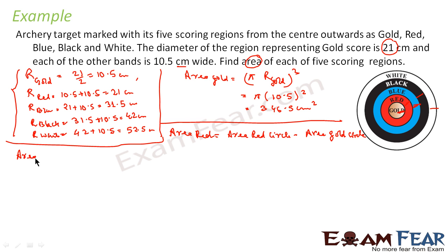So this will be, I will say, area of red circle is nothing but, π r_red square minus, area of gold is nothing but, π r_gold square. Correct? This will come out nothing but, π into, this is 21, r_red square, so π 21 square minus, π into, 10.5 square.